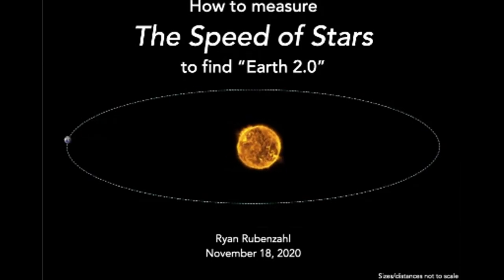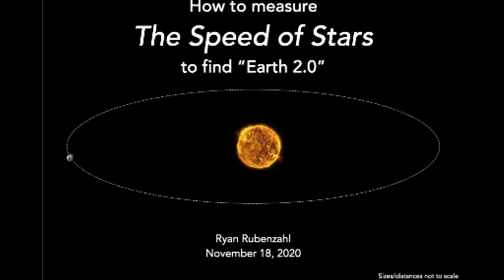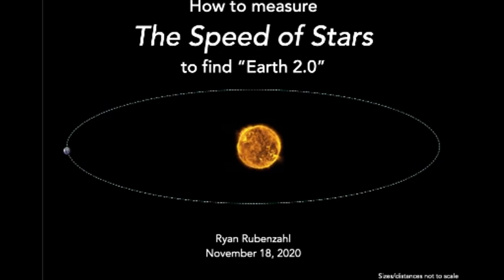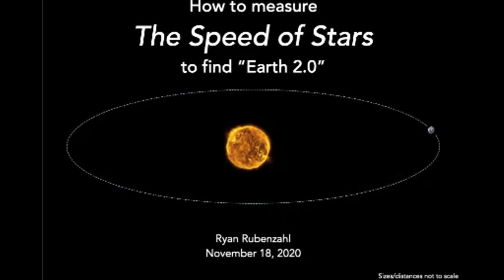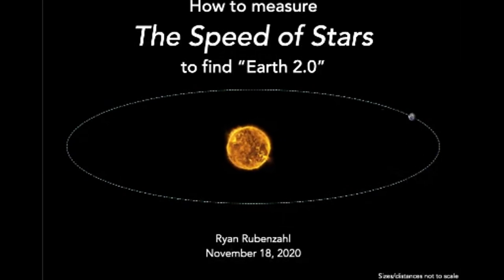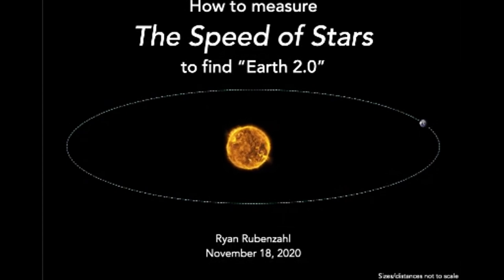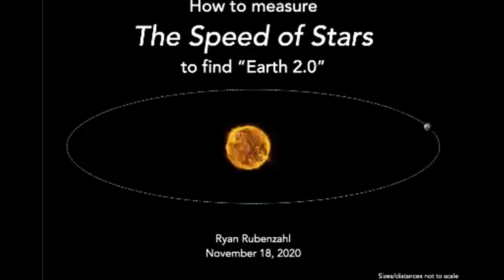Thanks, Steve, for inviting me here and all of you for having me to speak. My name is Ryan Rubenzahl. I'm a graduate student at Caltech working on my PhD in the field of exoplanet astronomy. The method I use to find exoplanets is one I'll describe in this talk — measuring the masses and orbits of exoplanets by measuring the speeds of their stars, and then using our knowledge of how orbits and gravity work to infer the presence of planets and derive their properties.